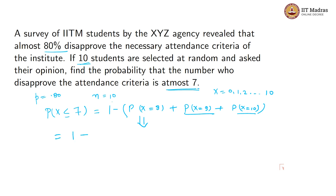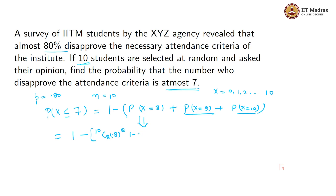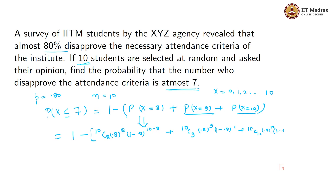You can write this as 1 minus: n is 10, r will be 8. So 10C8 times 0.8 to the power 8 times (1 minus 0.8) to the power (10 minus 8), plus 10C9 times 0.8 to the power 9 times (1 minus 0.8) to the power 1, plus 10C10 times 0.8 to the power 10 times (1 minus 0.8) to the power 0, which simplifies using 0.8 to the power 10.